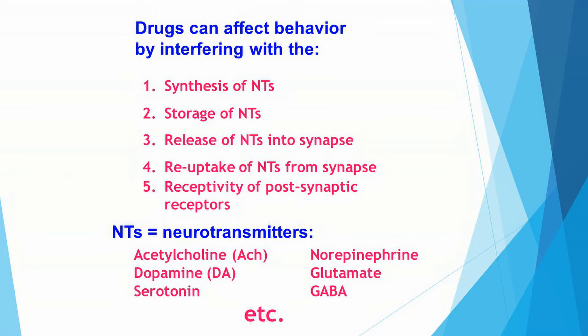I've mentioned one type of neurotransmitter called acetylcholine. And in fact, what I'm asking you to do right now is to learn the names of some neurotransmitters. You'll be reading about them in your textbook, but you don't have to memorize the function of every neurotransmitter. At this point, just learn the names of a few of these.